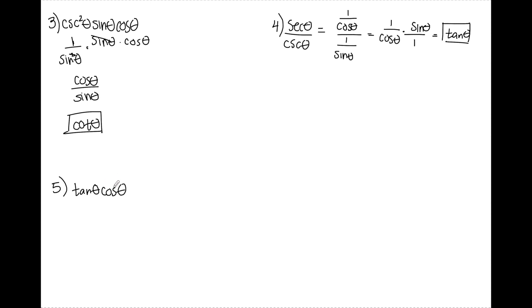Number five, cosine theta is already cosine theta. Tangent theta I can rewrite as sine theta over cosine theta. Cosine theta stays. Cosine theta's cancel, and I'm left with sine theta.